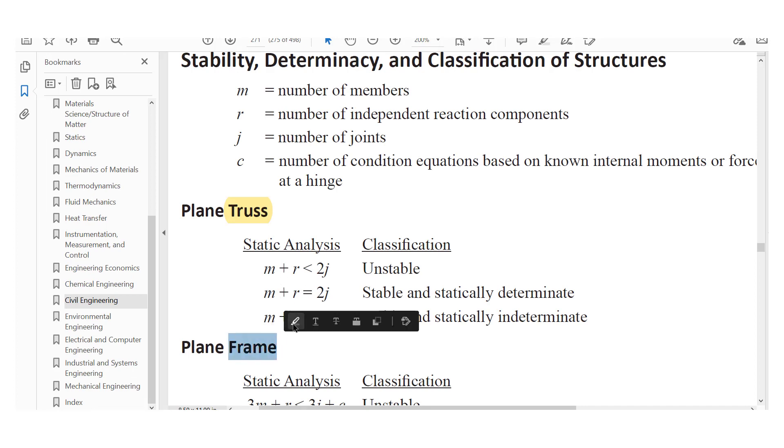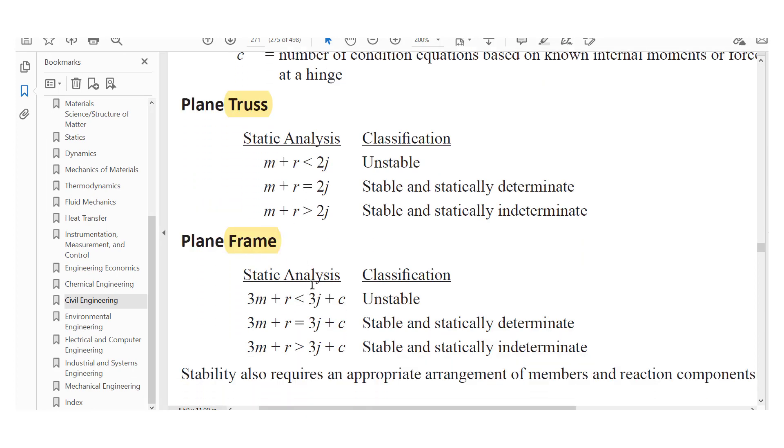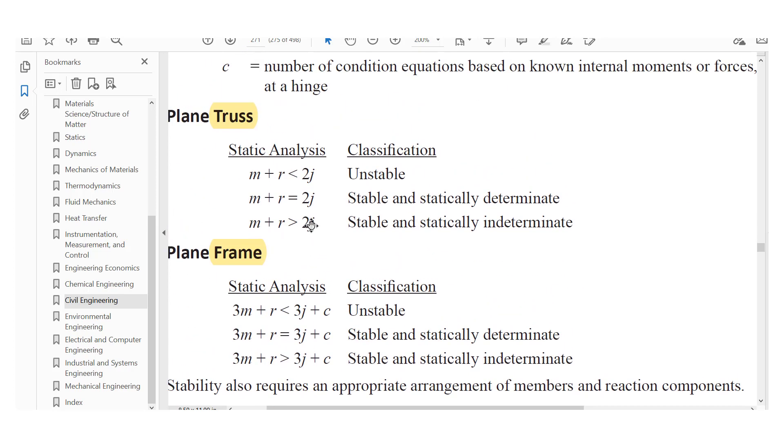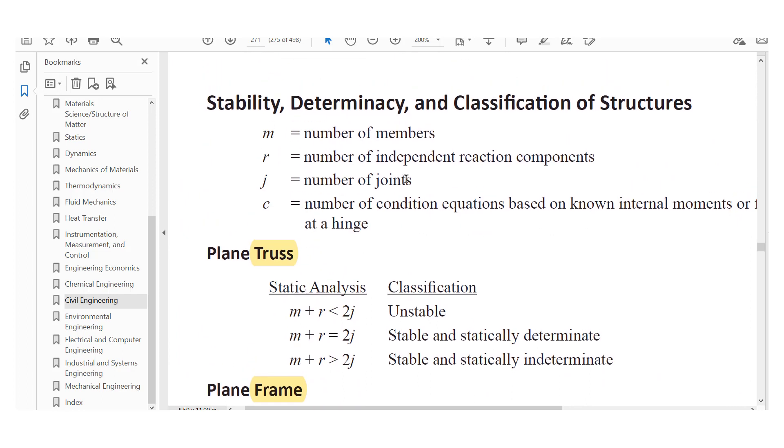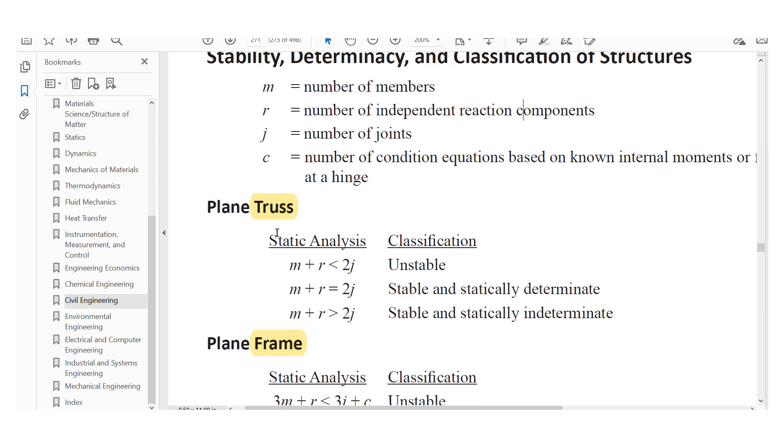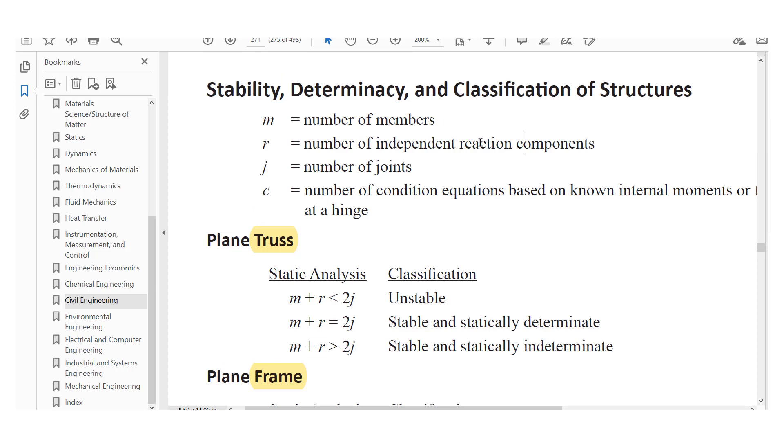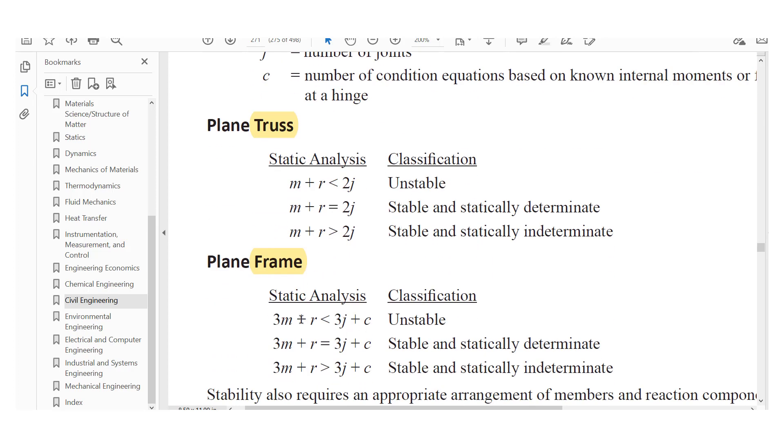We're looking at frames. In the previous video we did trusses, right? Same thing. We find M, the M value, the number of members. R is the number of independent reaction components. So we're looking essentially externally. We're not considering the hinges for trusses and frames. Do not consider the reactions at hinges for the frames when we're using this method here. So we know that's R, it's the external reactions.